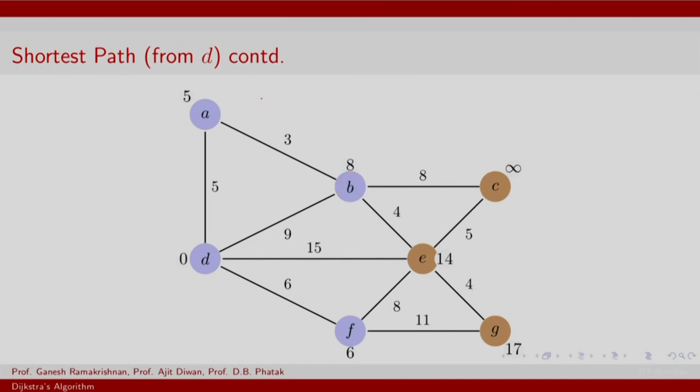The next element has to be picked up and that is B with weight of 8. Again you scan its neighbors. You find that 8 plus 4, 12 is less than 14. You could update the shortest path for E and likewise for C it is 16 to be updated. The next shortest node from the priority queue is going to be E with a weight of 12. Scan its neighbors. Is there a need to update the weights to the neighbors? Well, 17 versus 16, 16 is already shorter. 12 plus 4, 16 yes, you can update G and so on.